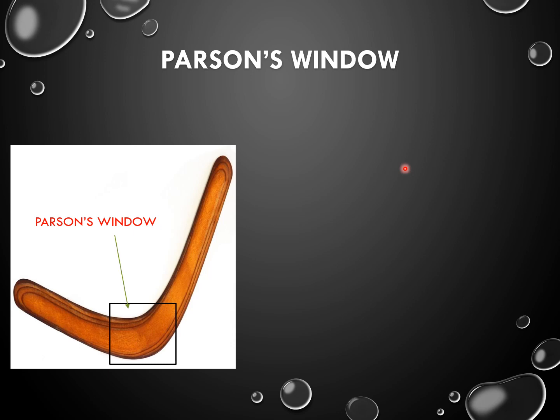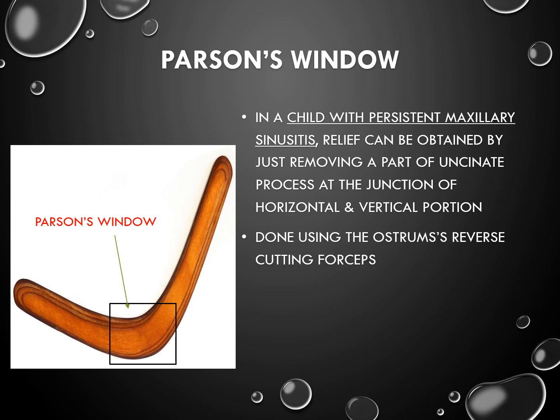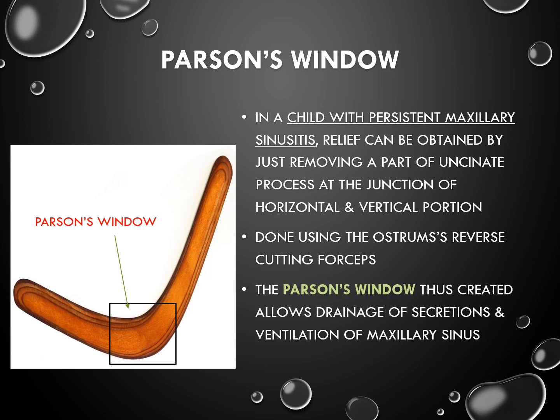Coming to Parson's window — what is Parson's window? In a child with persistent maxillary sinusitis, relief can be obtained by just removing a part of the uncinate process at the junction of the horizontal and vertical portion. It is done using the Ostrom's reverse cutting forceps. The Parson's window thus created allows drainage of secretions and ventilation of the maxillary cells.